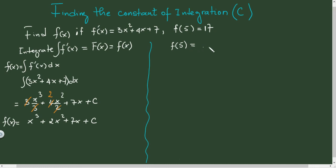f(5) = 17, so 17 = 5³ + 2(5²) + 7(5) + C, which gives us 17 = 125 + 50 + 35 + C.